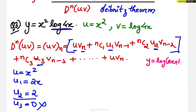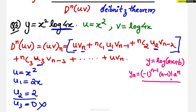The formula for the nth derivative of y = log(ax + b) is: (-1)^(n-1) × (n-1)! × a^n divided by (ax + b)^n. This particular formula has to be applied here for v = log(4x).